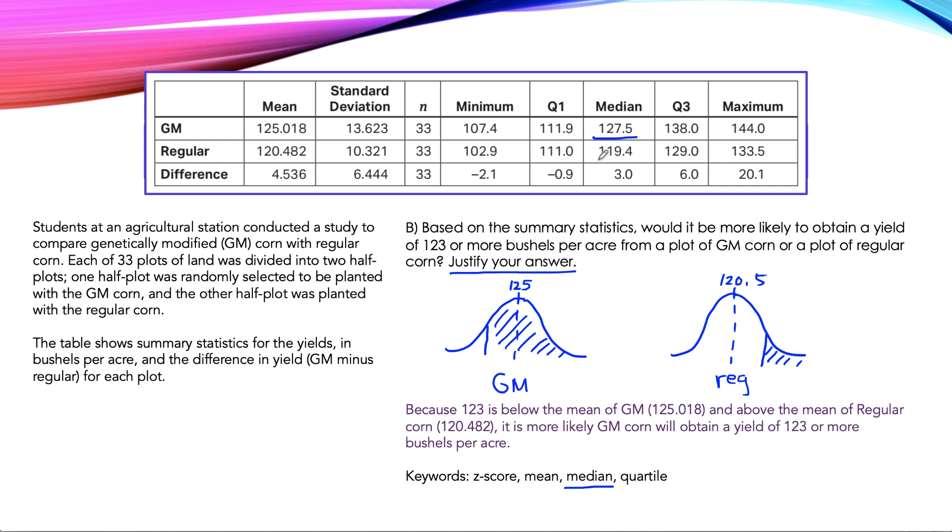Another way you could talk about it is by talking about the quartiles. 123 falls between the first quartile and the median for GM, and it falls between the median and the third quartile for regular. So we can assume that there is going to be a higher percentage of bushels that are above 123 for GM corn.